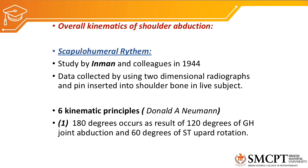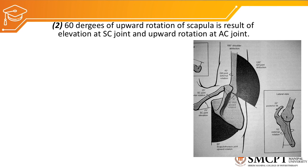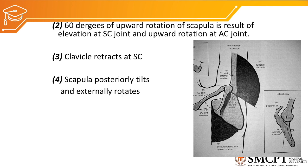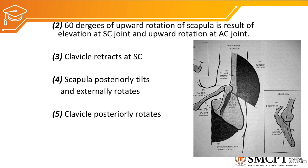The first principle is that 180 degrees of abduction at the shoulder complex is achieved by 120 degrees of glenohumeral joint movement and 60 degrees of scapulothoracic upward rotation. This 60 degrees of upward rotation is achieved by elevation of the sternoclavicular joint — about 25 degrees — and upward rotation of the acromioclavicular joint — about 35 degrees. The clavicle also retracts at the sternoclavicular joint, along with the scapula posteriorly tilting and externally rotating, to create a protraction movement. The clavicle also posteriorly rotates up to 25 degrees, and there will be external rotation of the glenohumeral joint up to 45 degrees, reducing greater tubercle impingement on the acromion and allowing more range of abduction.